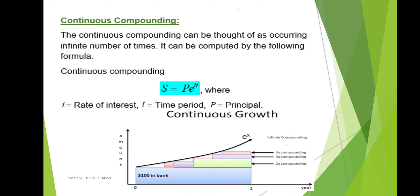Next, continuous compounding can be thought of as occurring an infinite number of times. It is computed by the formula: S equals P times e raised to the power i times t, where i is the rate of interest, t is the time period, P is the principal amount, and e is a mathematical constant.